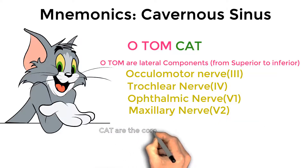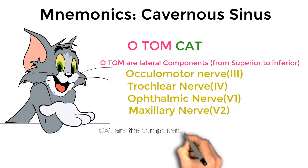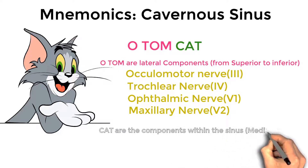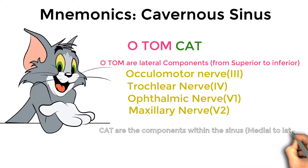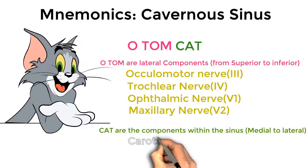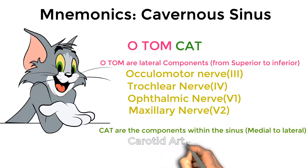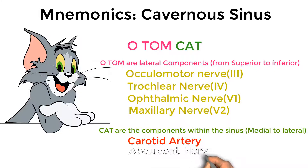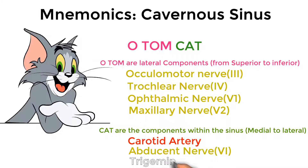CAT represents the components within the sinus, present from the middle to the lateral side. C stands for the carotid artery. A stands for the abducens nerve, which is the sixth cranial nerve. T stands for the trigeminal ganglion, which is present on the lateral side and extends to the posterior side of the cavernous sinus.